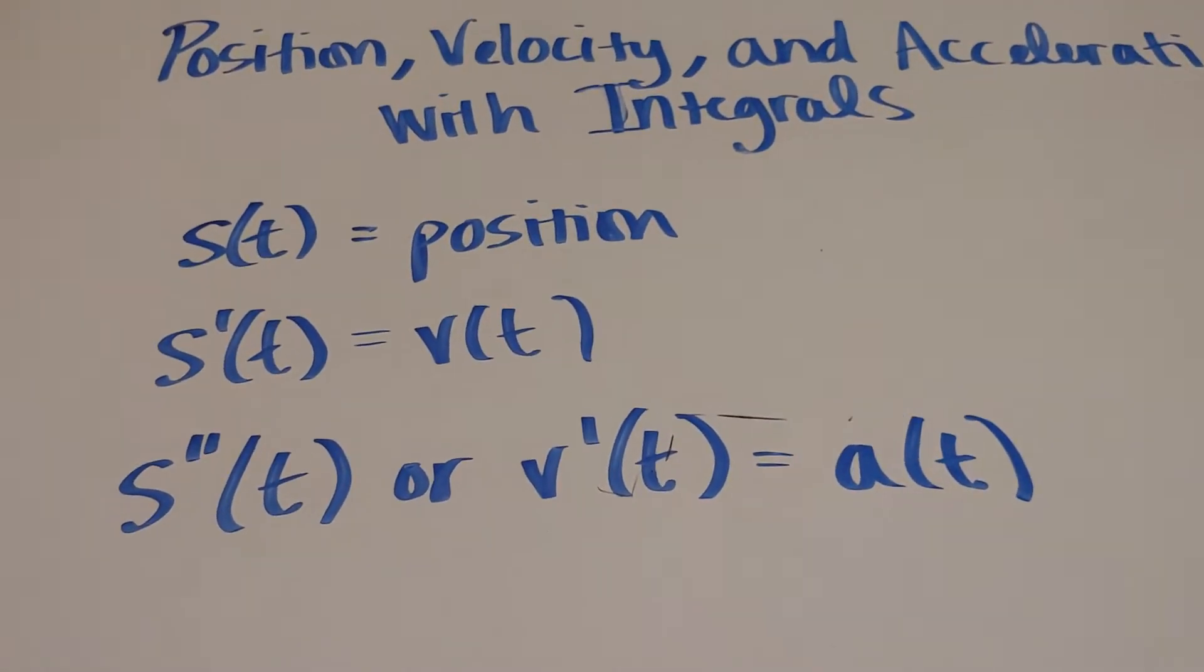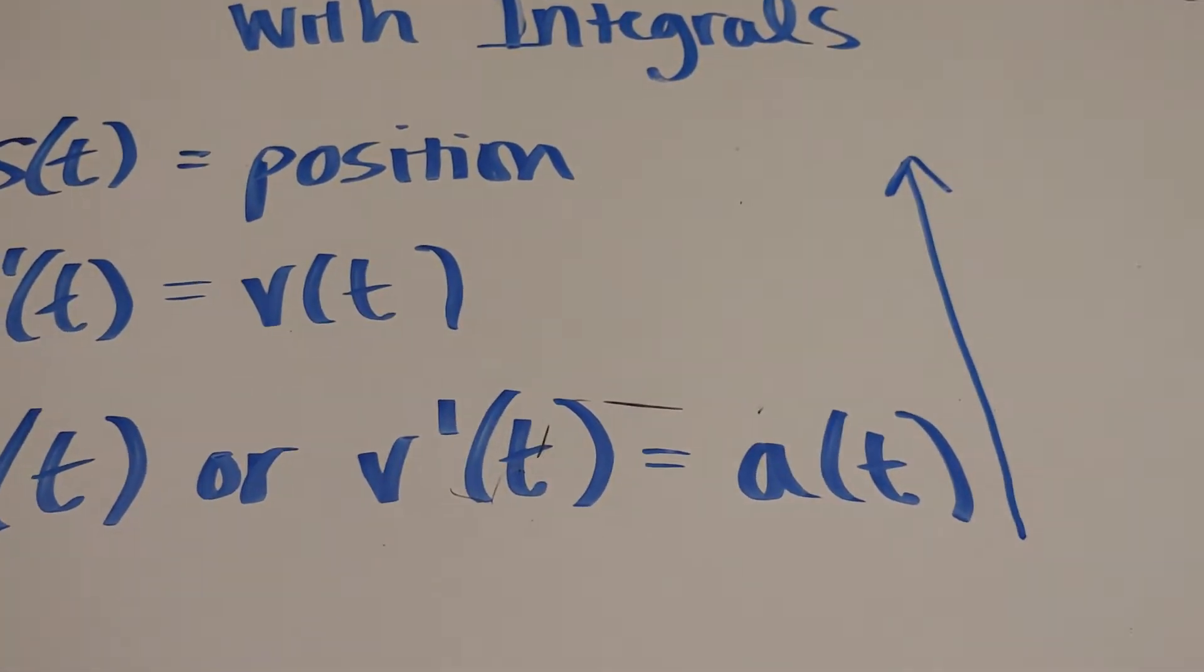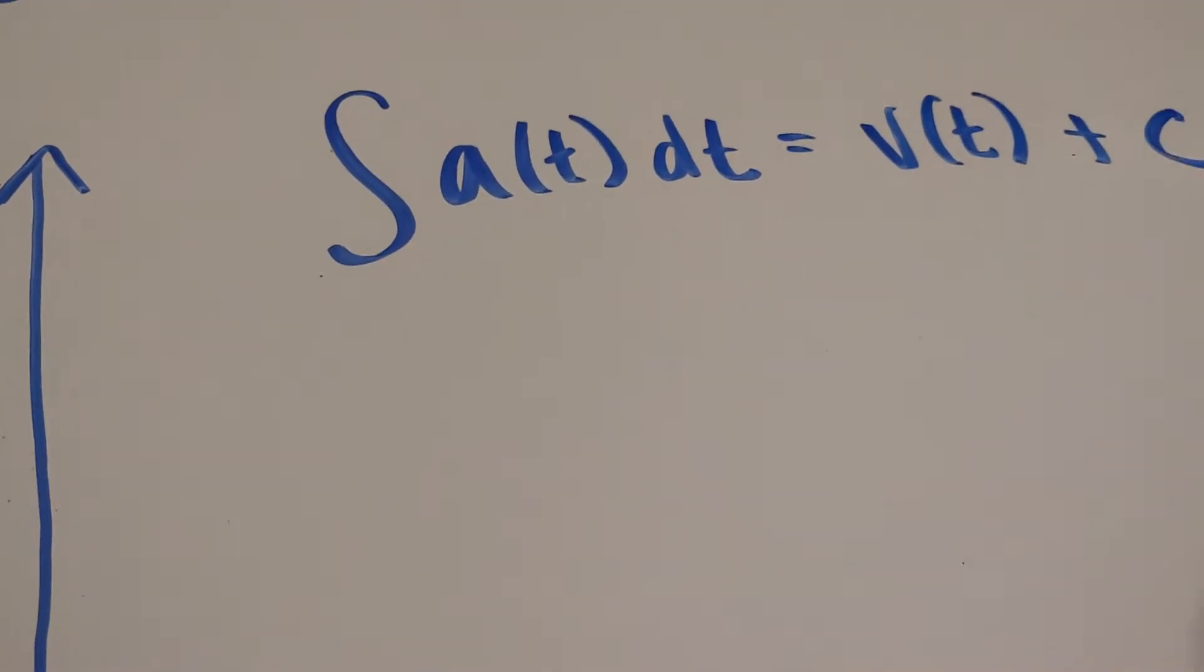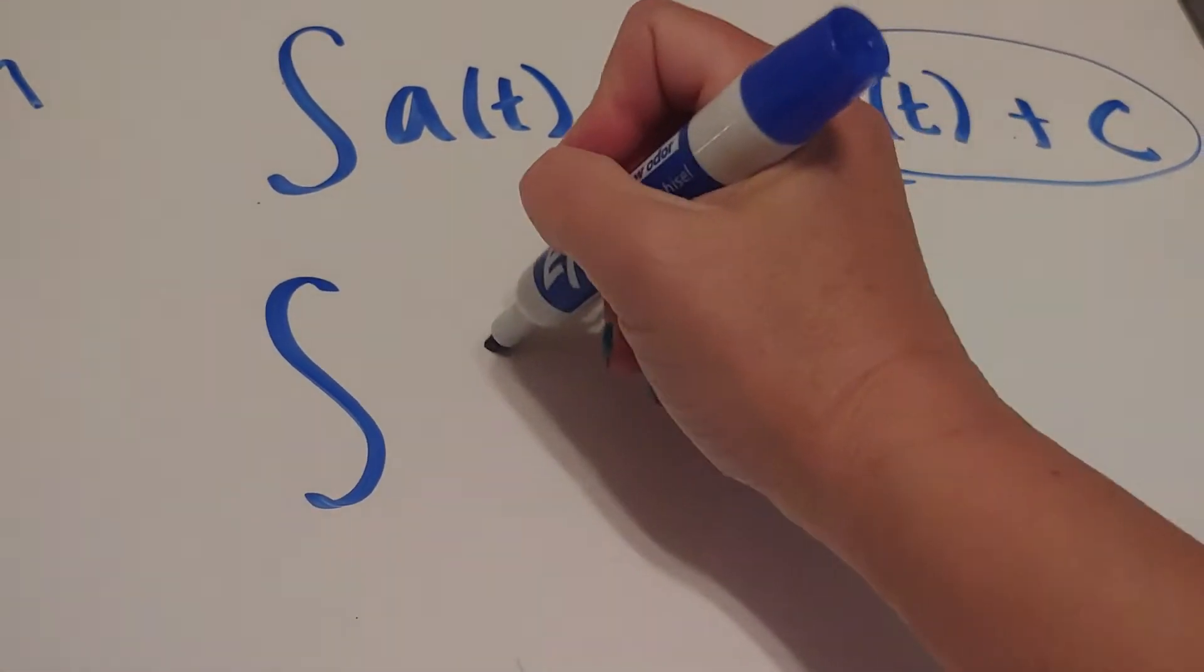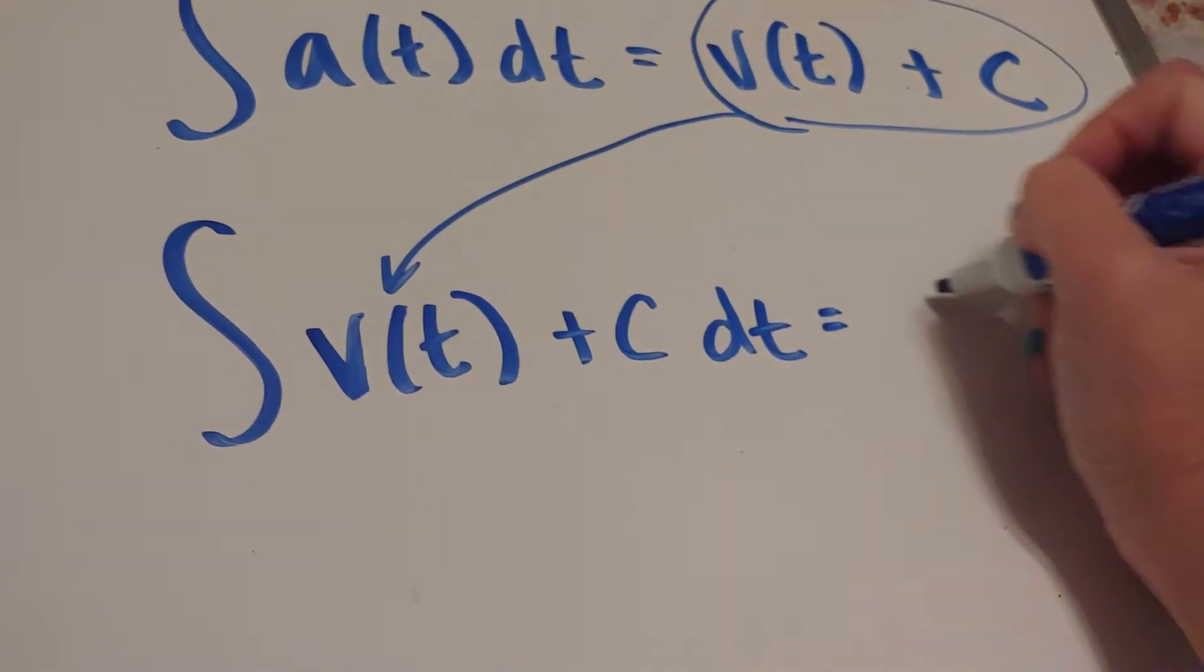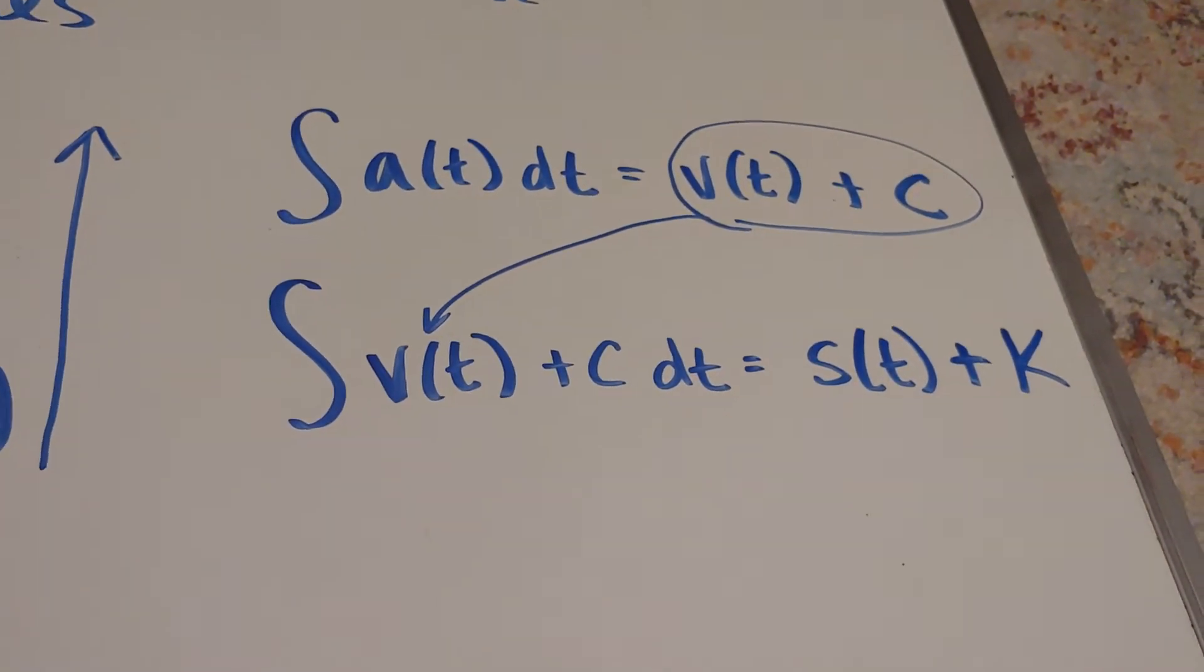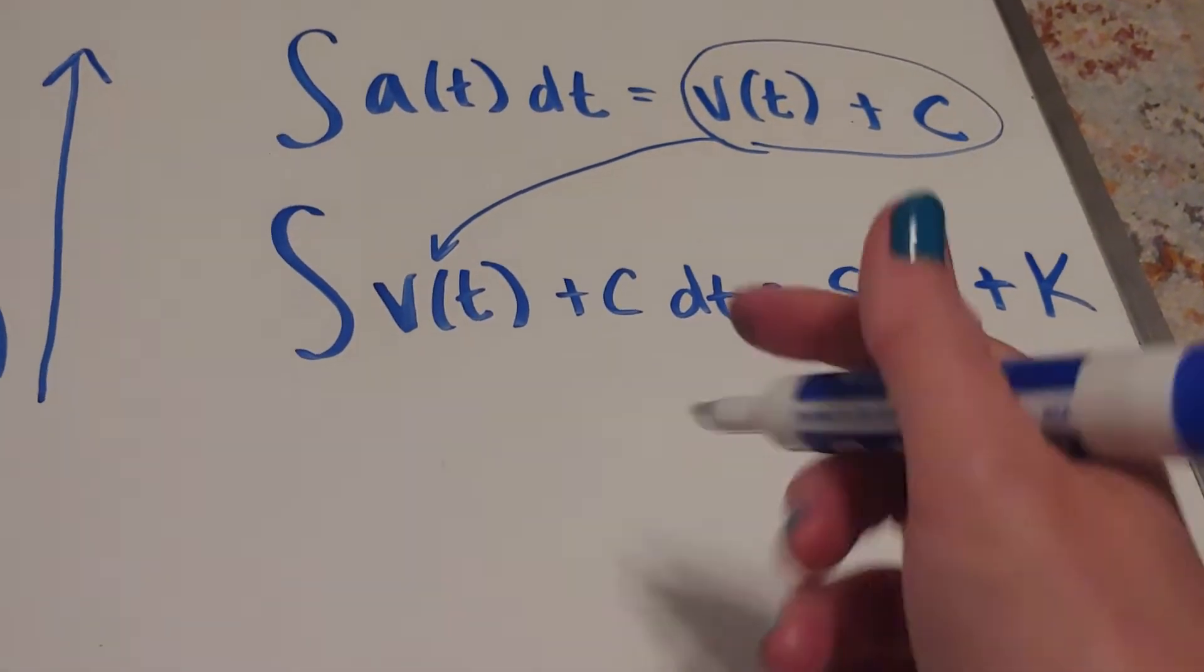What we want to do is we want to go backwards. So what's gonna happen is I'm gonna go up this way, meaning that if I integrate the acceleration, I'm gonna get the velocity plus a constant. And then if I integrate all of this, I'm gonna get the position plus another constant. What we're gonna do though is we're gonna solve for the constant along the way, and how we solve for the constant along the way is with initial conditions.